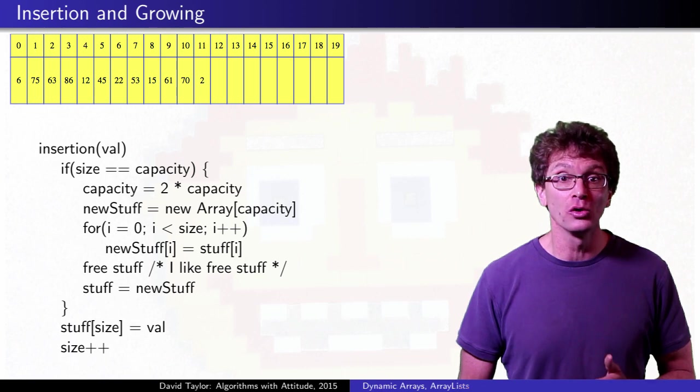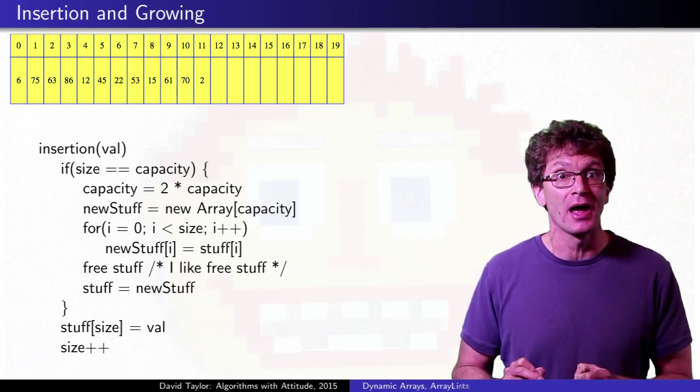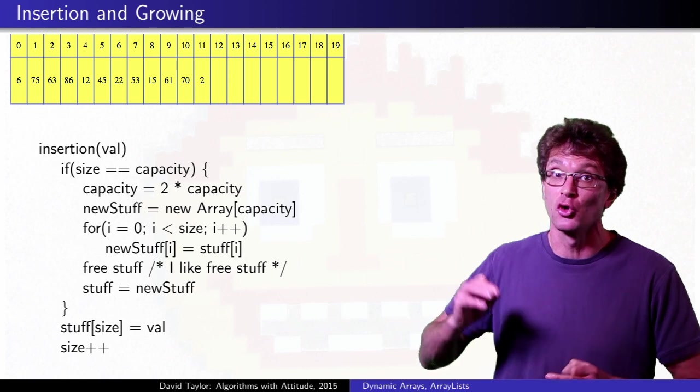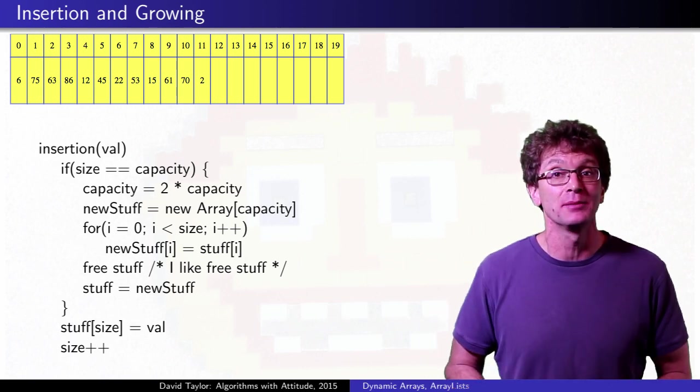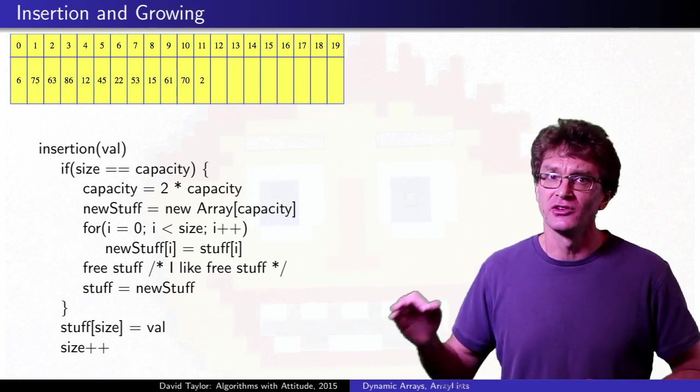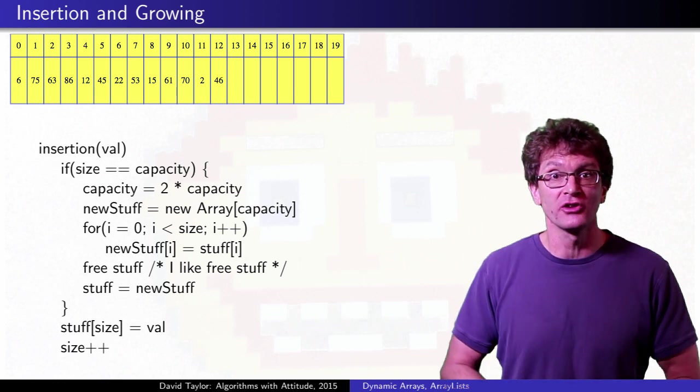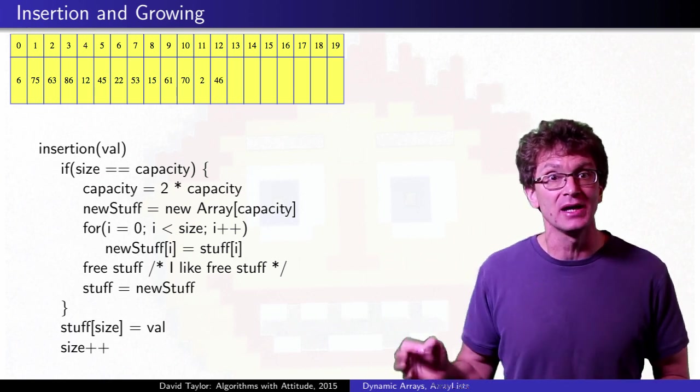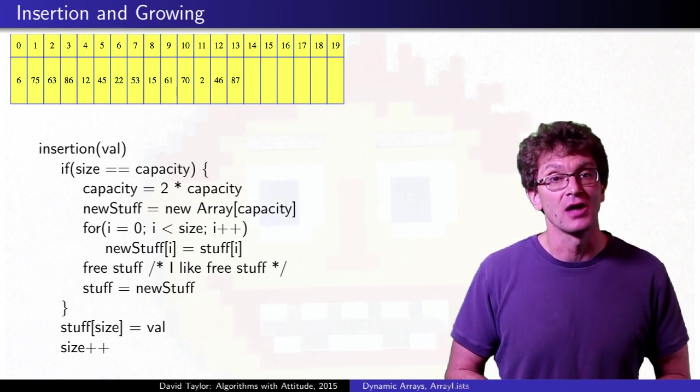While inserting only to the end is a bit of a limitation, the underlying array structure does let us directly access any item in constant time. If the size is less than our capacity, we can also add or delete from the end of the list in constant time too.